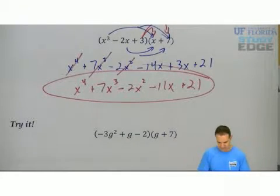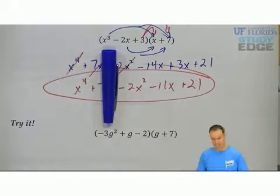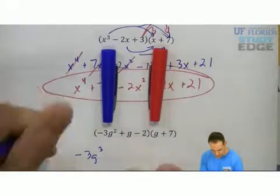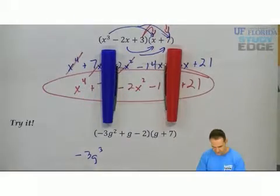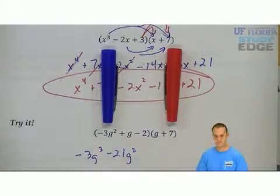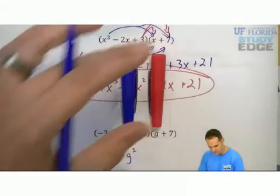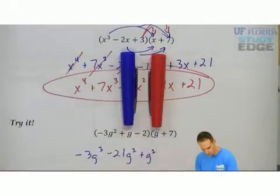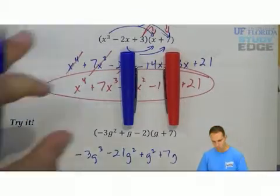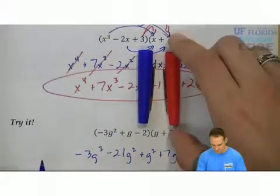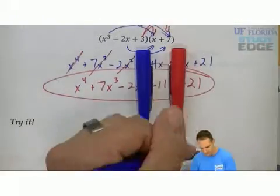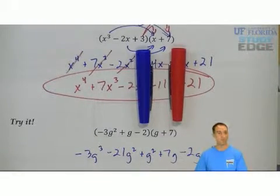We have negative 3g squared. We're going to multiply by g. That'll give me negative 3g cubed. Then 7. Negative 3 times 7 is negative 21g squared. Next up, move it over to the g. g times g would be g squared. g times 7 would be 7g. Move it over one more time. Negative 2 times g is minus 2g. And negative 2 times 7 is minus 14.